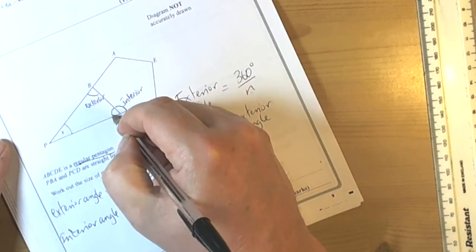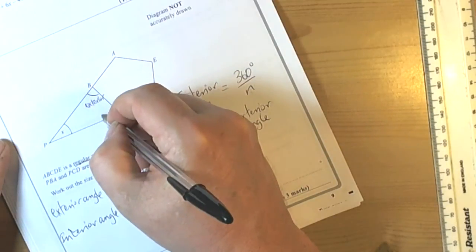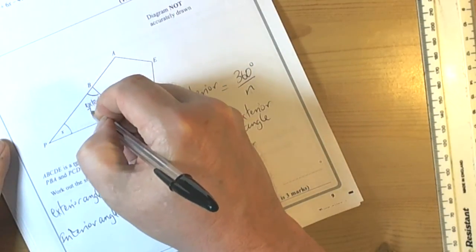So if that's the interior, this is also actually an exterior angle. So we've also worked out that this is 72 degrees and this is 72 degrees.